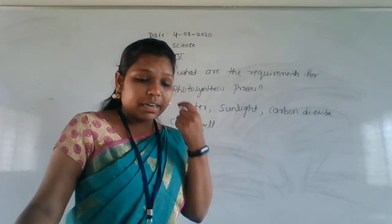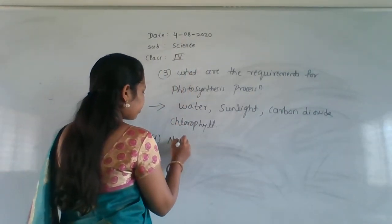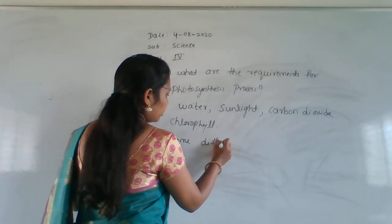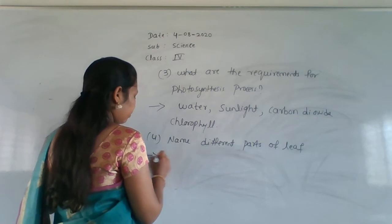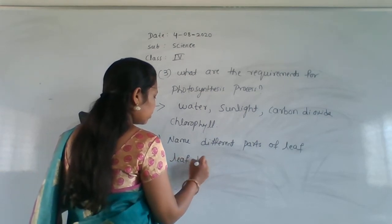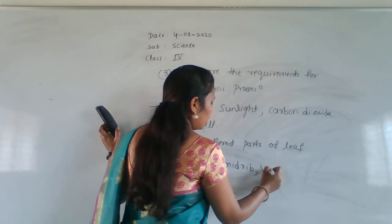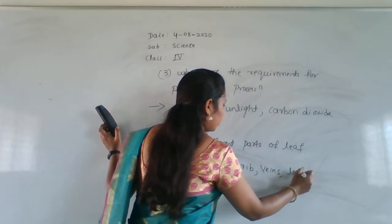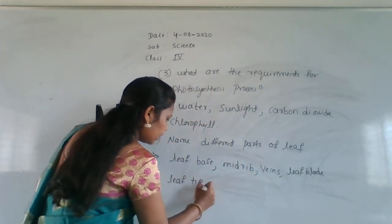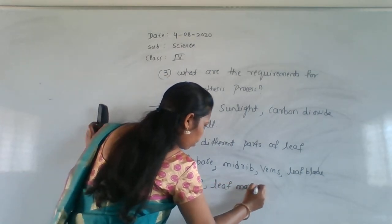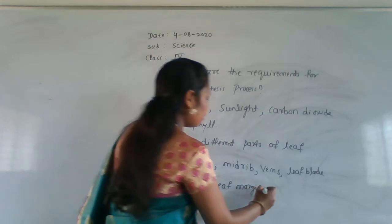Next question: name the different parts of a leaf. The parts of a leaf are: leaf base, midrib, leaf stalk, leaf tip, leaf margin, and stomata. See the textbook if any part is missing and write it in your notebook.